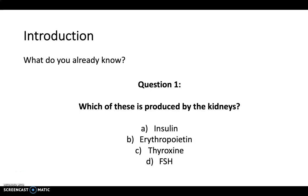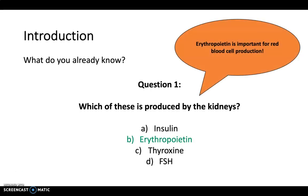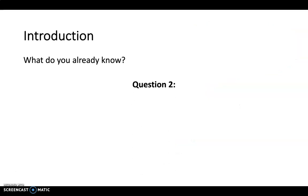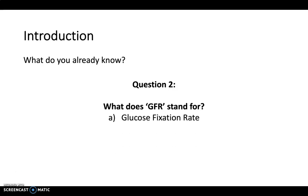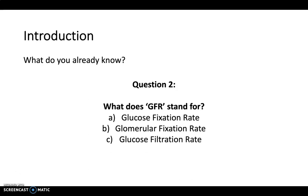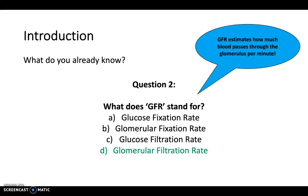The answer is B, erythropoietin, which is important for red blood cell production. Next question: what does GFR stand for? Is it glucose fixation rate, glomerular fixation rate, glucose filtration rate, or glomerular filtration rate?